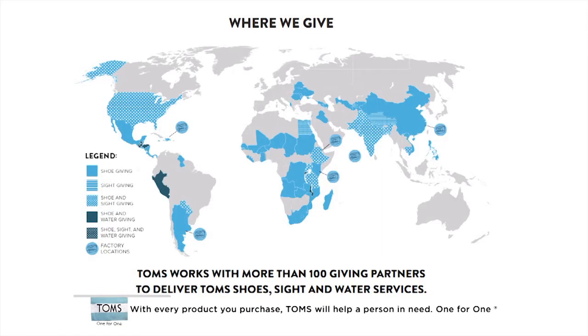So just so you can see, these are the countries in which we give. So shoe giving only are the countries that are just solid blue. The horizontal stripes are countries where we only give sight. The dotted blue is shoe and sight. Countries where we have just dark blue is shoe and water. Dark dotted is shoe, sight, and water. That's just Guatemala. It's the only country where we have overlap of all three. And then the little sewing machines are factory locations.